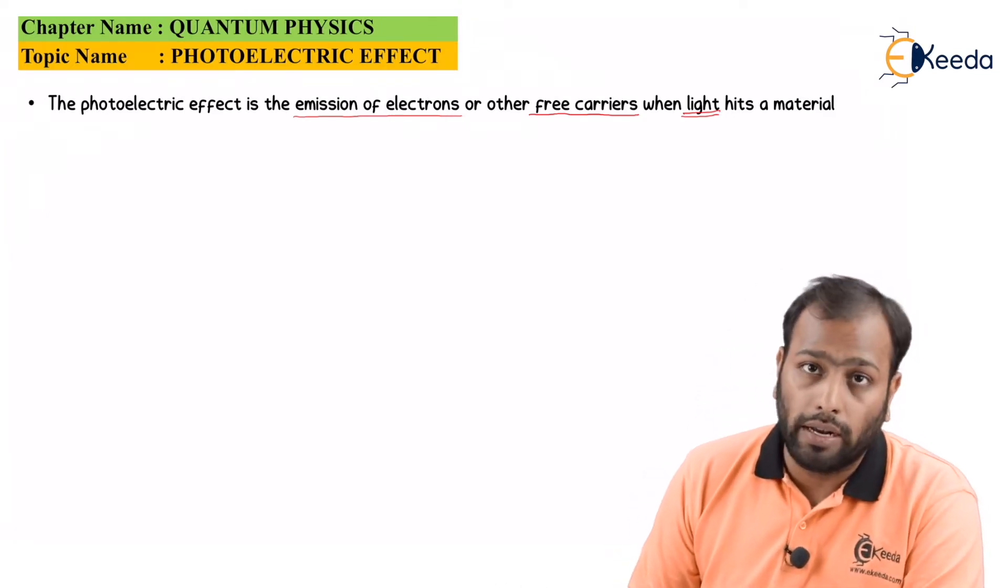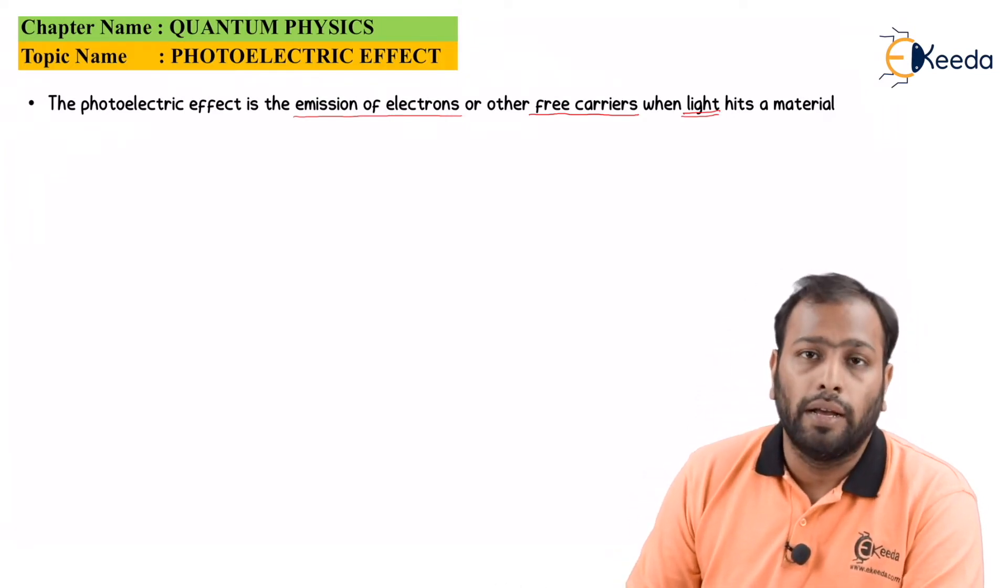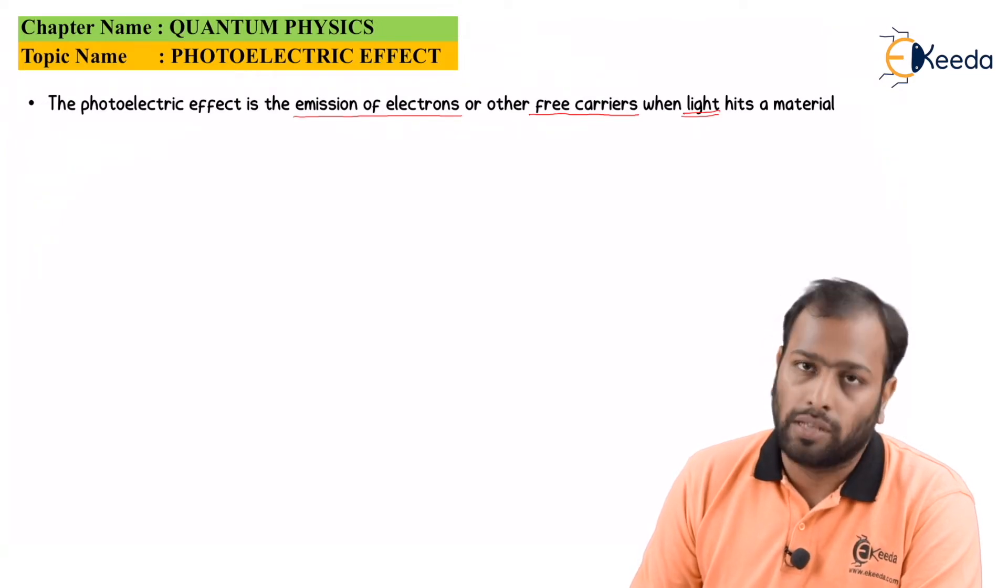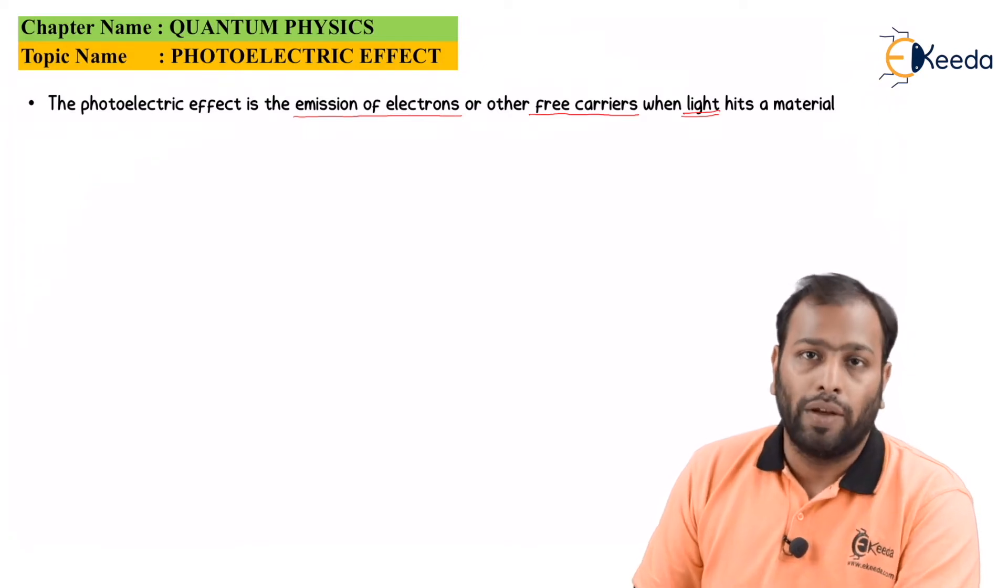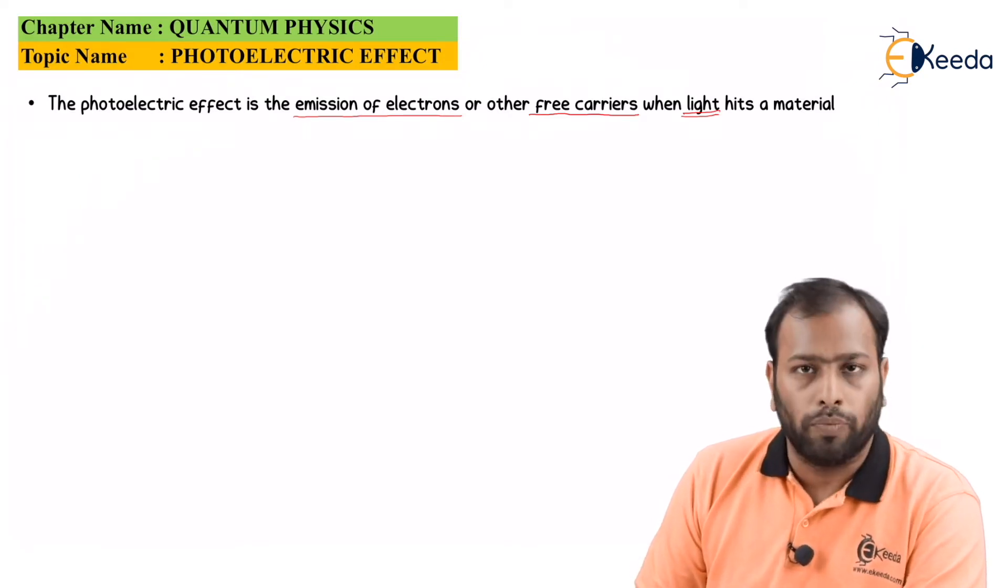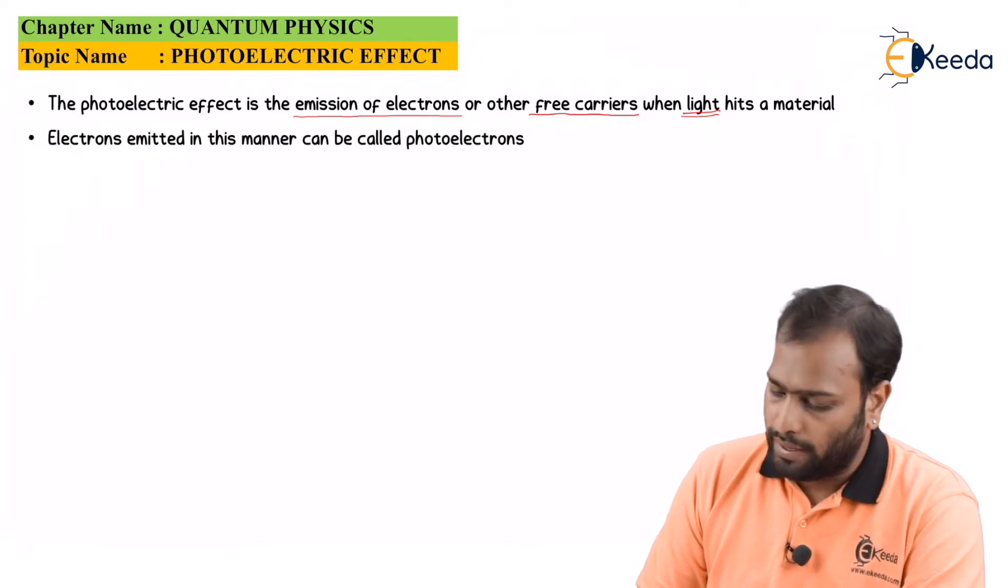Well, this is not an ordinary material, of course. To make a point, it is a special material in which electrons are emitted. Electrons will not be emitted on any random material when you hit the light. So basically, this is what photoelectric effect is.